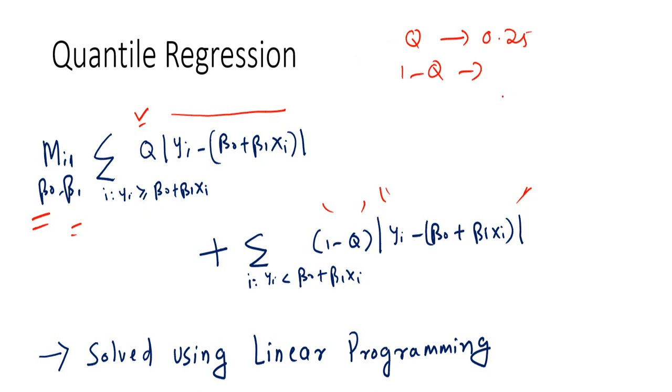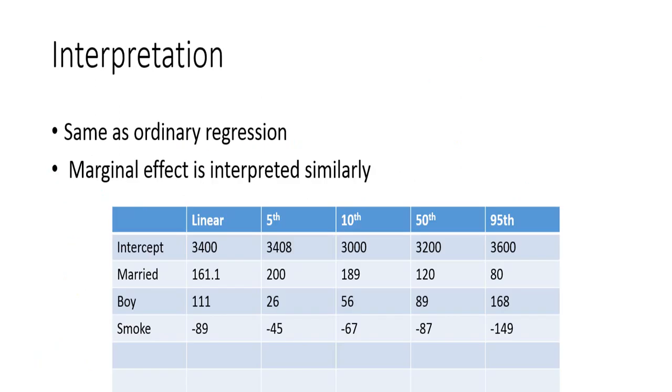Let's say it is used for penalizing for 25th percentile. So one minus Q would penalize for the rest part. So if it is 25, the rest part will be the 75 percentile in the other side. One can estimate the coefficient of quantile regression by using the linear programming.